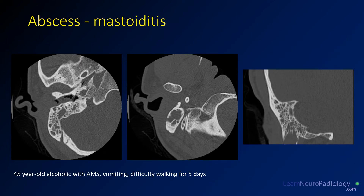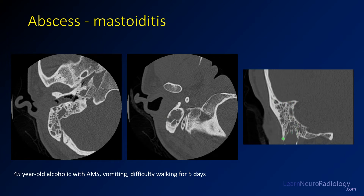Mastoiditis can also result in abscess. Here we see a CT of the temporal bones in a 45-year-old alcoholic who is altered. The external auditory canal is filled with debris, and the mastoid air cells are completely opacified. The middle image shows areas where the bone is dehiscent along the lateral margin — no bone encapsulating those air cells. On the coronal image the mastoid air cells are completely opacified with significant bone loss throughout.